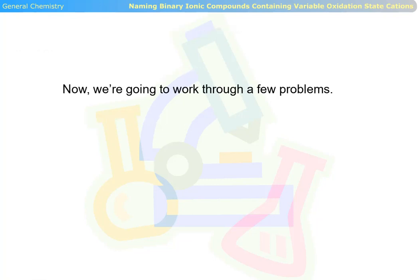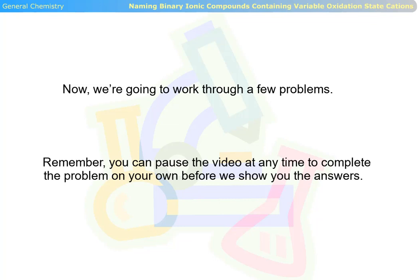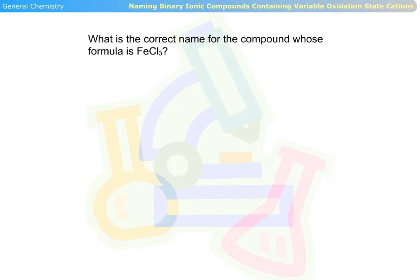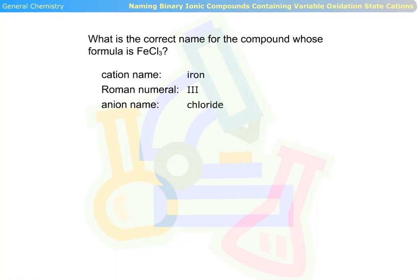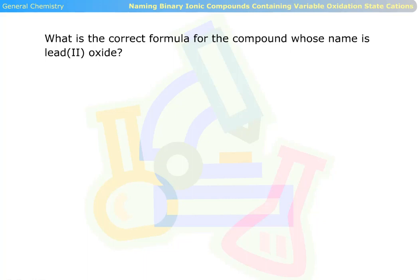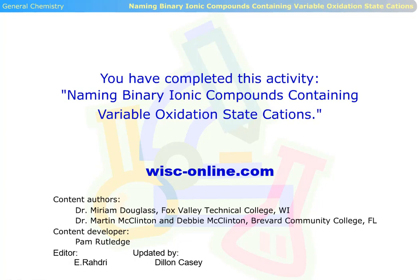Now we're going to work through a few problems. Remember, you can pause the video at any time to complete the problem on your own before we show you the answers. What is the correct name for the compound whose formula is FeCl3? The cation name is iron. The Roman numeral is three. The anion name is chloride. So the compound is called iron(III) chloride. What is the correct formula for the compound whose name is lead(II) oxide? The answer is PbO. You have completed this activity naming binary ionic compounds containing variable oxidation state cations.